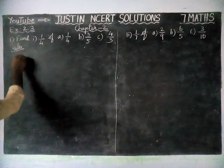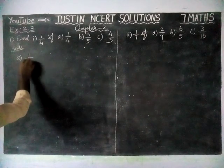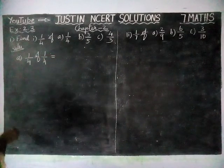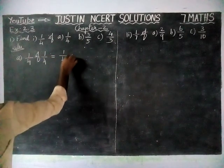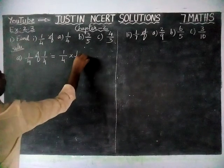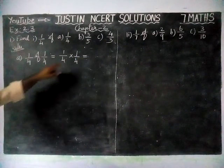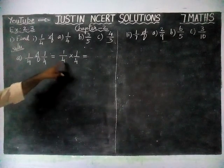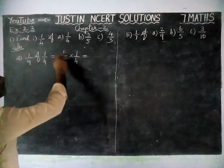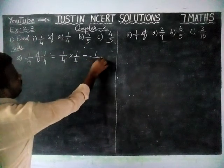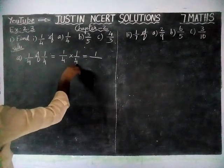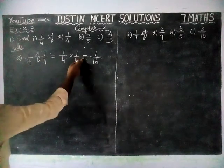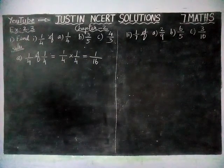So, in the first question, option A: 1/4 of 1/4 is equal to 1/4 into 1/4. Here, we don't have any simplification options, so we are multiplying directly. Numerator into numerator: 1 into 1 is equal to 1, divide by denominator into denominator: 4 times 4 is 16. So, 1/4 of 1/4 is equal to 1/16.